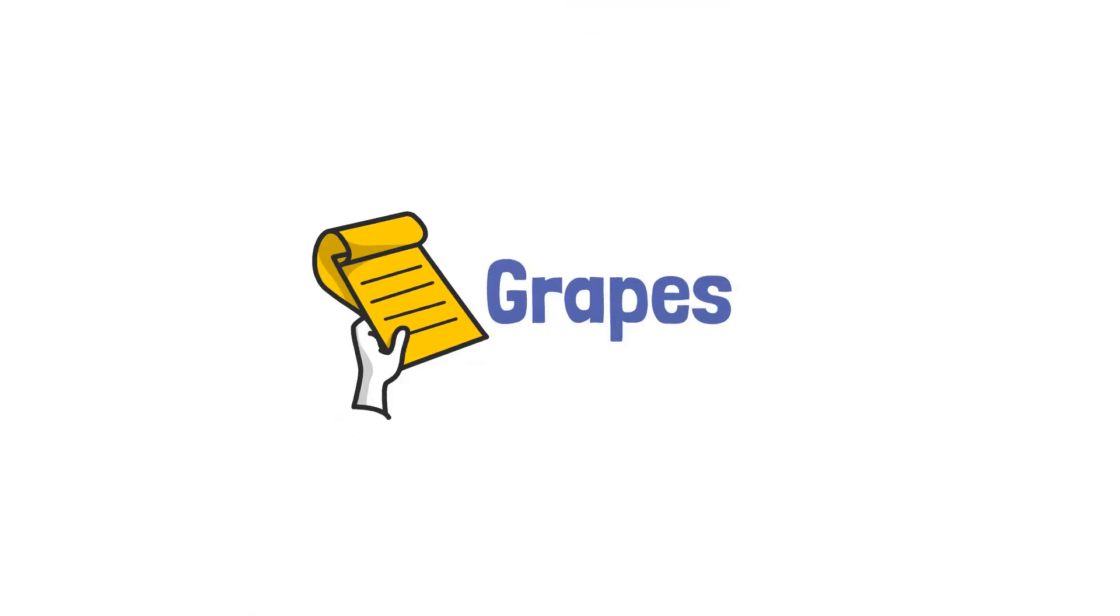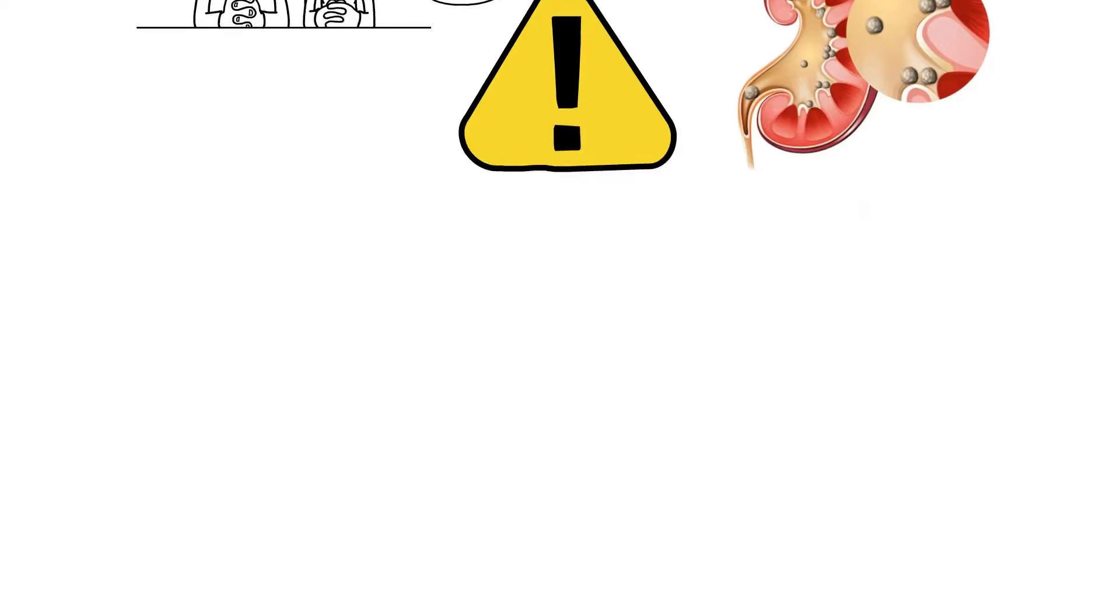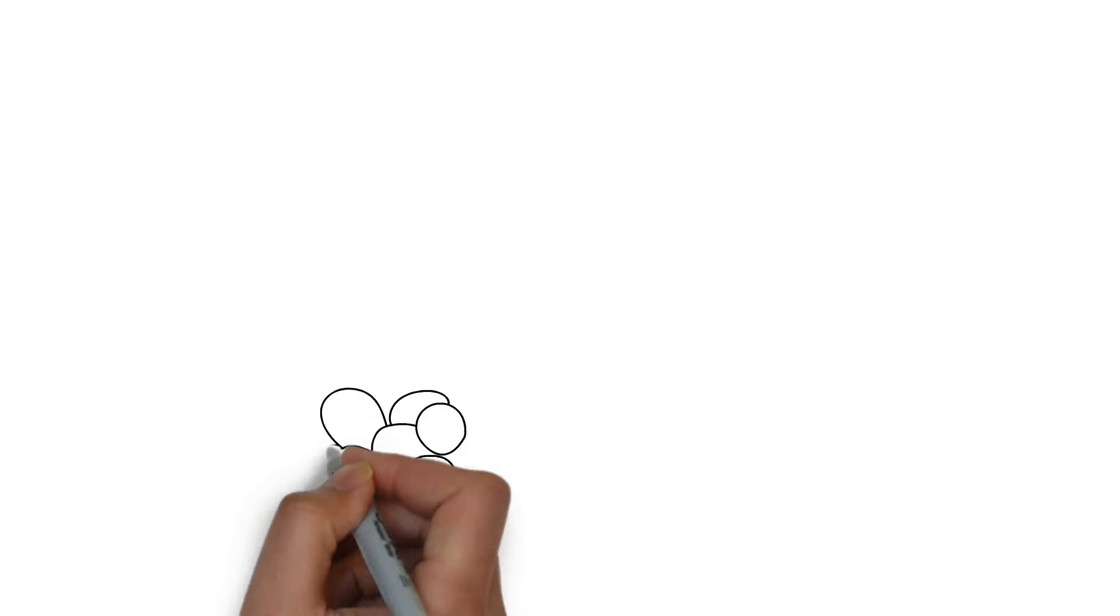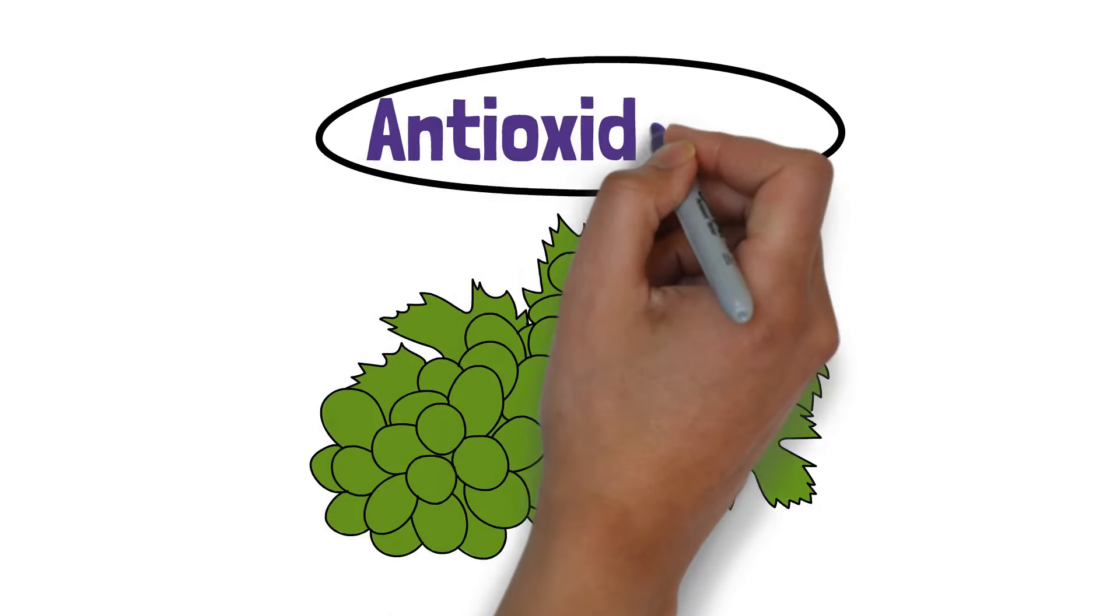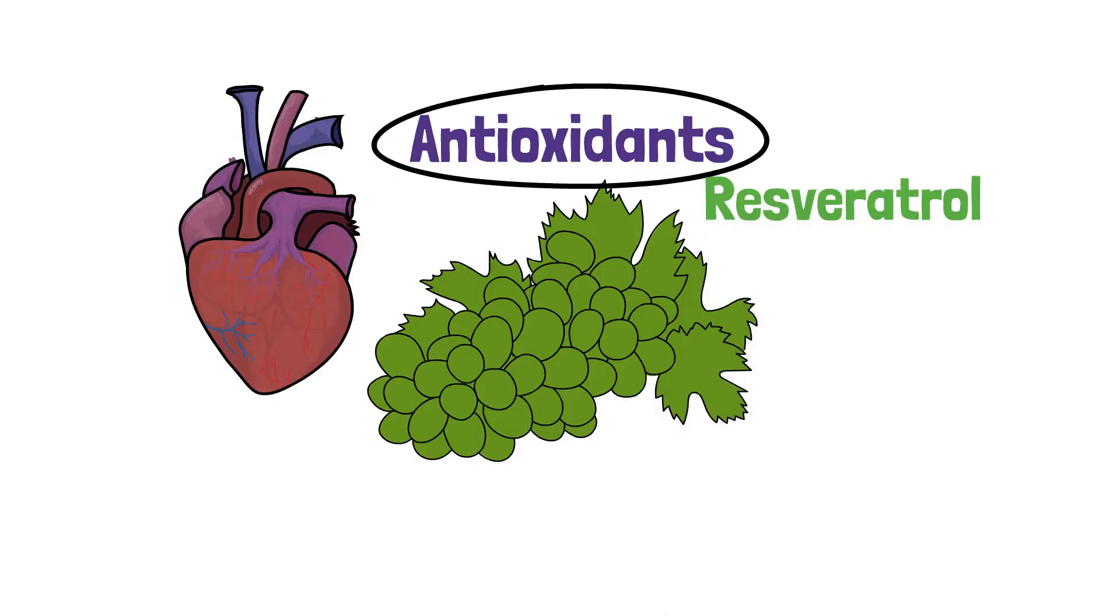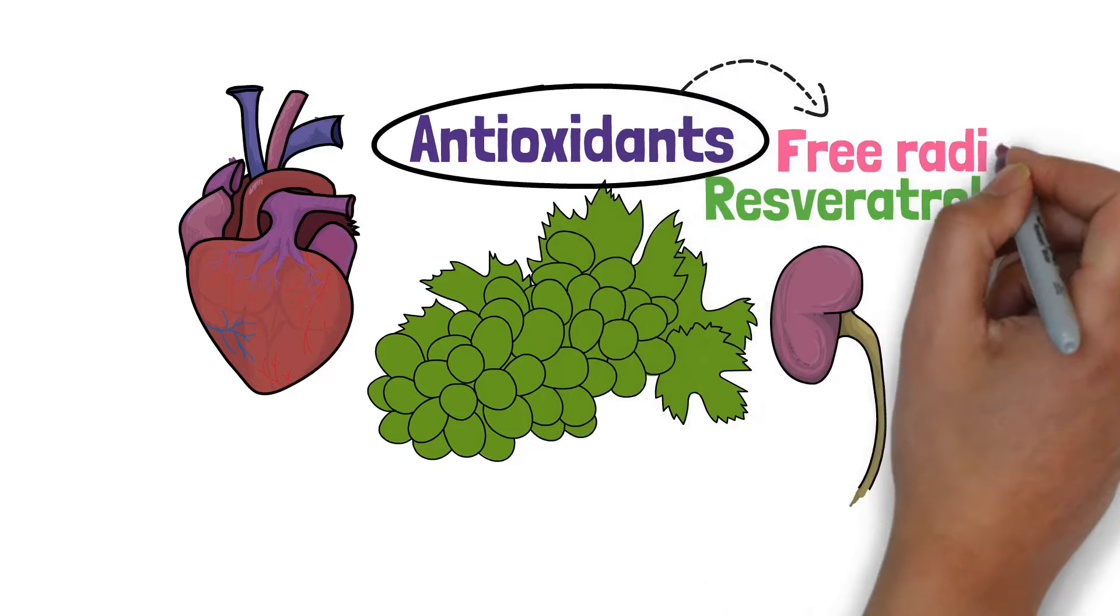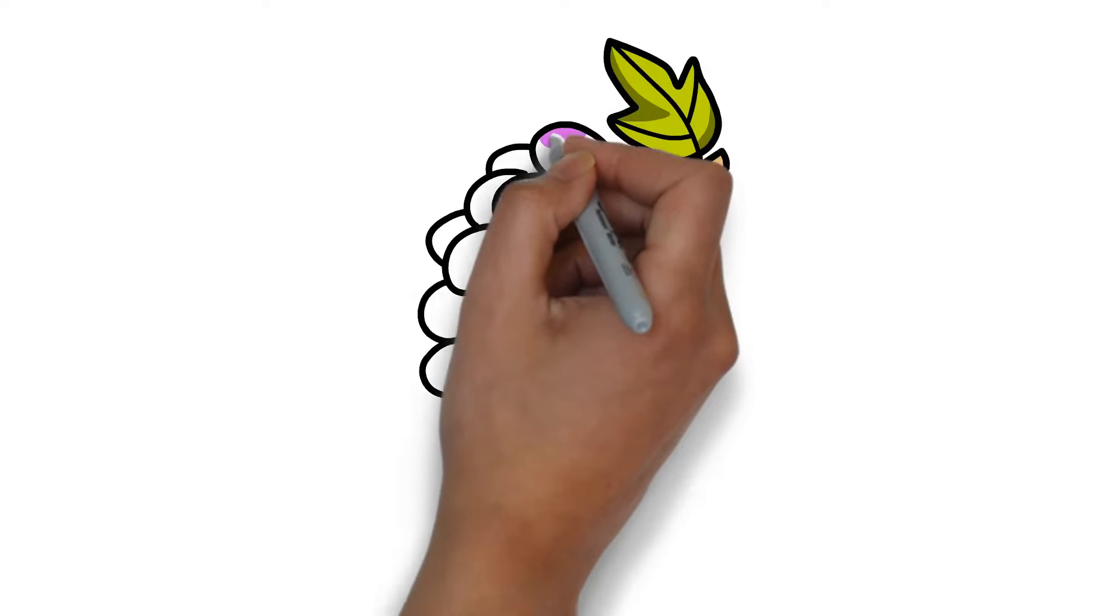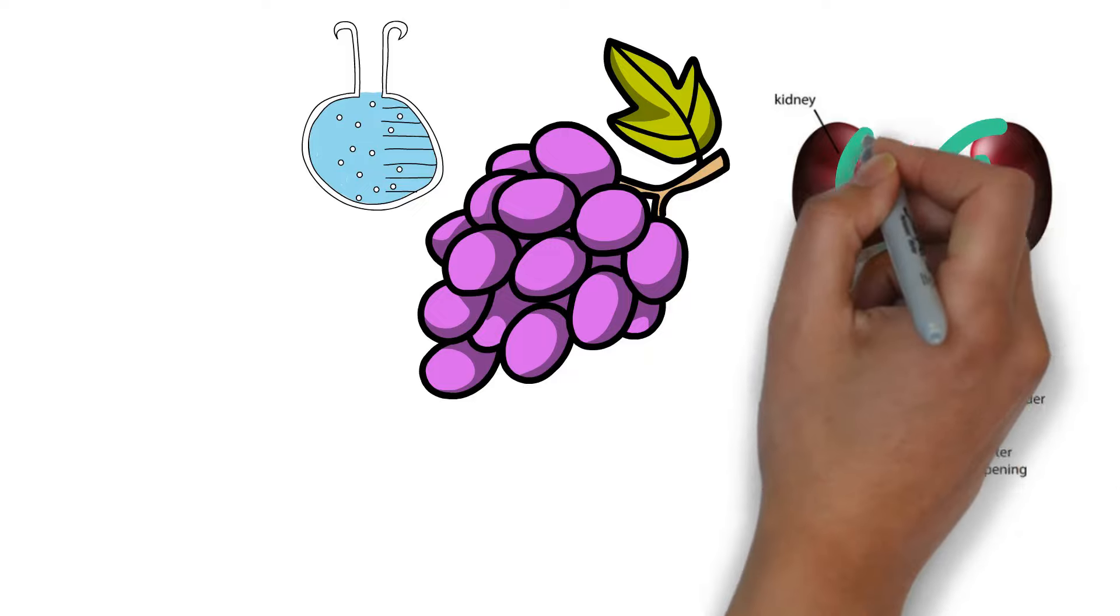Fruit number five, grapes. Did you know that grapes can help reduce the risk of kidney stones? That's right. These tiny fruits are packed with benefits for your kidneys. Grapes are not just a delightful snack. They're a powerhouse of antioxidants, especially resveratrol, which supports both heart health and kidney health. These antioxidants combat free radicals, reducing the risk of damage to your kidneys. Moreover, grapes high water content aids in flushing out toxins, promoting healthy kidney function.